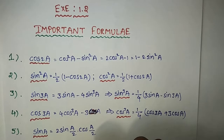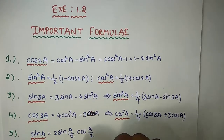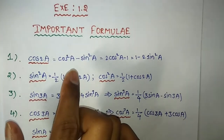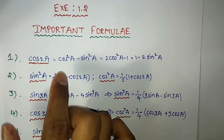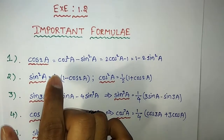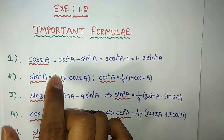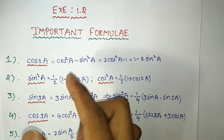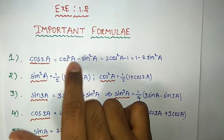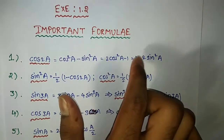We have to explain the important basic formulas and integration formulas. So the first one: cos2a equals cos²a minus sin²a. In the previous videos we explained example problems in Exercise 1.1 using the cos2a formula. This is a very important formula.